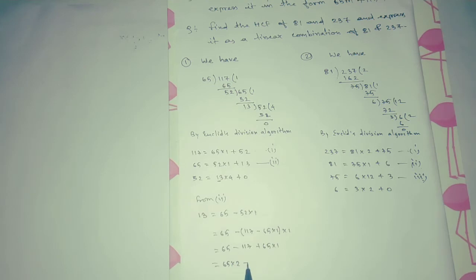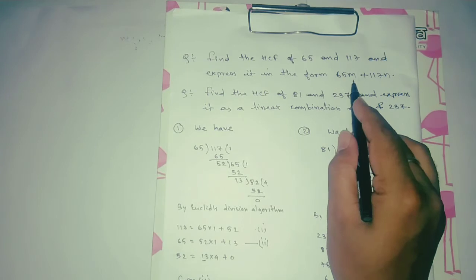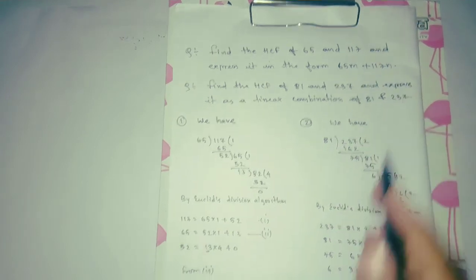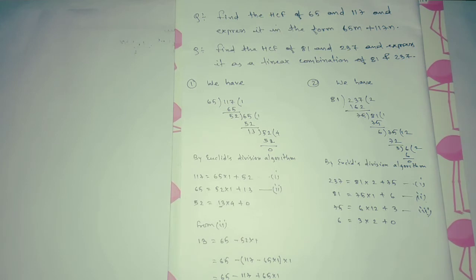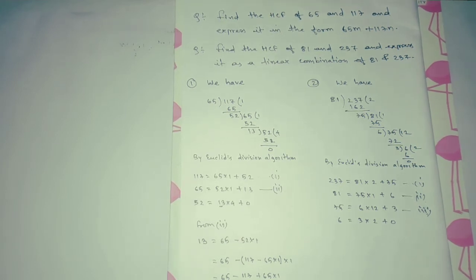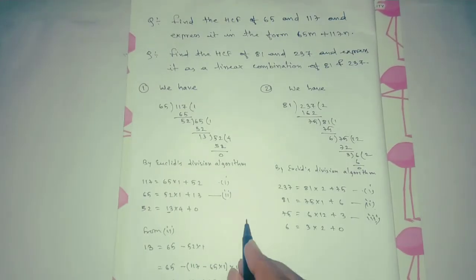Rearranging to get positive symbols: 13 = 65 × 2 + 117 × (−1). Comparing with the form 65m + 117n, we get m = 2 and n = −1. That is our answer for the first problem. Now let's proceed to the second problem.